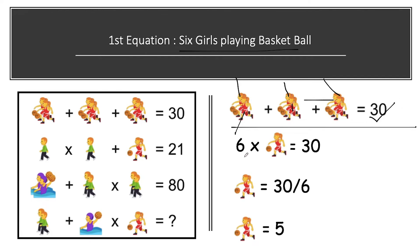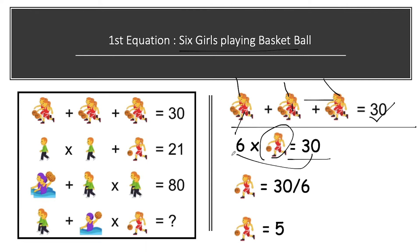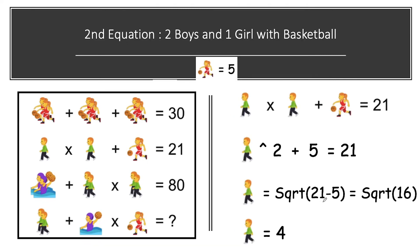Solving this equation: six times one girl playing with basketball equals 30. Six moves to the right-hand side as division, so one girl playing with basketball equals 30 divided by 6, which is equal to 5. From the first equation, the value of one girl playing basketball is 5.